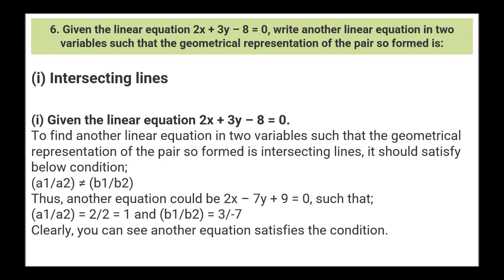Next, question 6: given the linear equation 2x + 3y - 8 = 0, write another linear equation in two variables such that the geometrical representation of the pair so formed is intersecting lines. The given linear equation is 2x + 3y - 8 = 0. For intersecting lines, it should satisfy: a1/a2 ≠ b1/b2. Another equation could be 2x - 7y + 9 = 0, such that a1/a2 = 2/2 = 1 and b1/b2 = 3/-7. Clearly, this equation satisfies the condition.